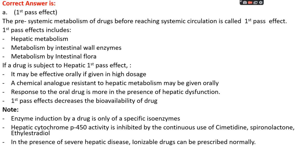The pre-systemic metabolism of a drug before reaching systemic circulation is known as the first pass effect. It mainly includes hepatic metabolism by the liver, metabolism by intestinal wall enzymes, and metabolism by intestinal flora. If a drug is subject to hepatic first pass effect, it will be more effective at a higher oral dose. The first pass effect decreases the bioavailability of the drug — the percentage of drug reaching blood circulation in unchanged form.